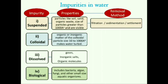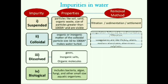For removal of suspended impurities, filtration, sedimentation, or settlement method will be suitable. Colloidal impurities can be removed by first coagulation and then sedimentation or filtration. Various coagulants like FeSO4, alum, sodium aluminate, and aluminium sulfate can be used.